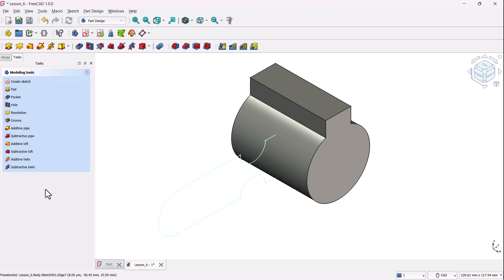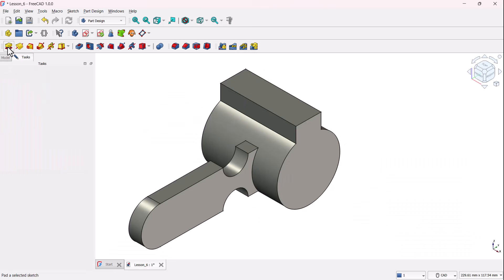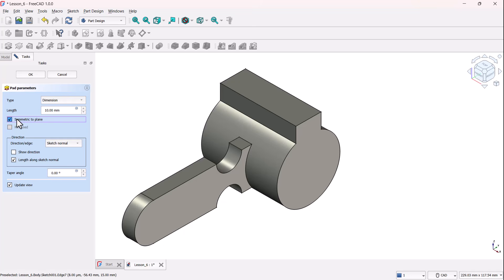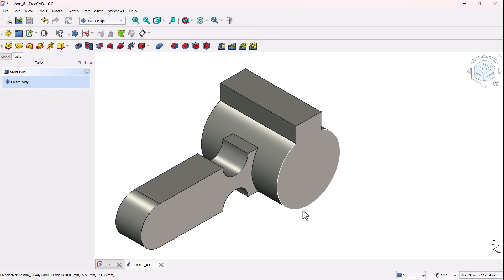Back in the part design workbench, select the pad tool and tick symmetric to plane to extrude your sketch evenly in both directions. And set the length to 20 millimeters and hit OK. And there we go. All the additive features where we add material are done.